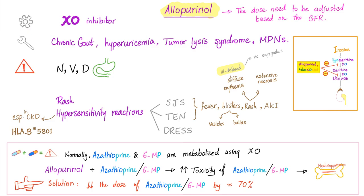Allopurinol — mechanism: xanthine oxidase inhibitor. Indications: chronic gout, hyperuricemia, tumor lysis syndrome, myeloproliferative neoplasms. Side effects: nausea, vomiting, diarrhea, rash, and hypersensitivity reactions. These were discussed in detail in the previous video.